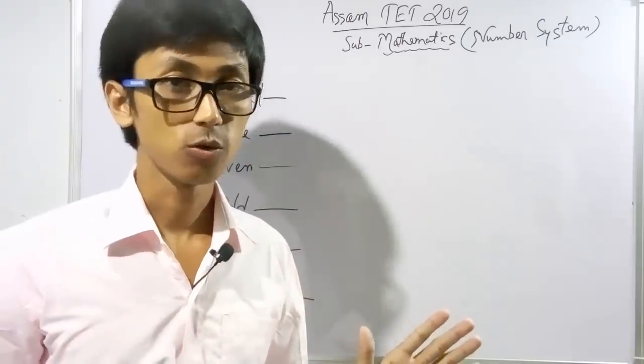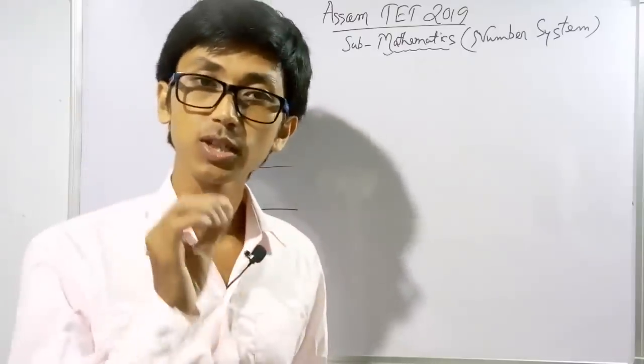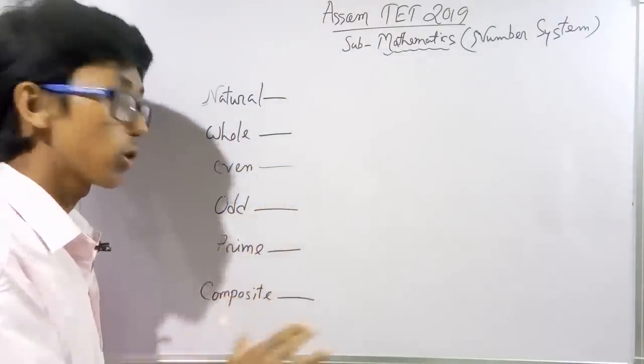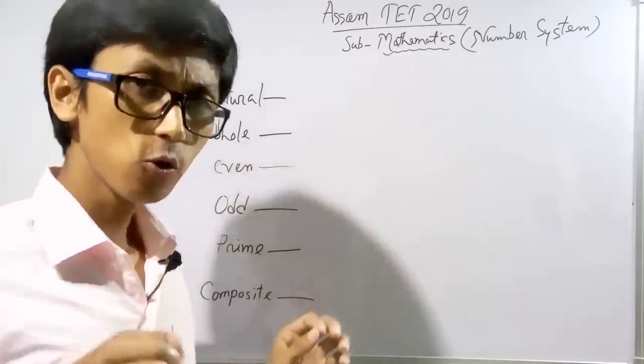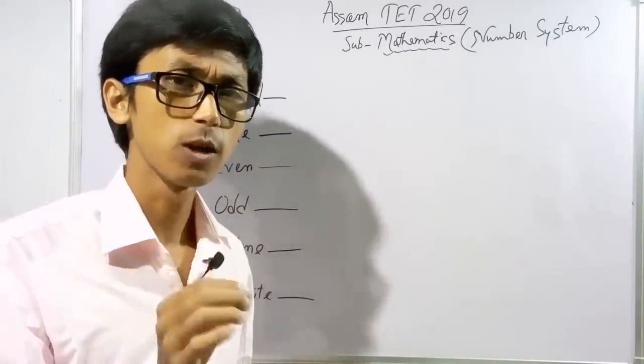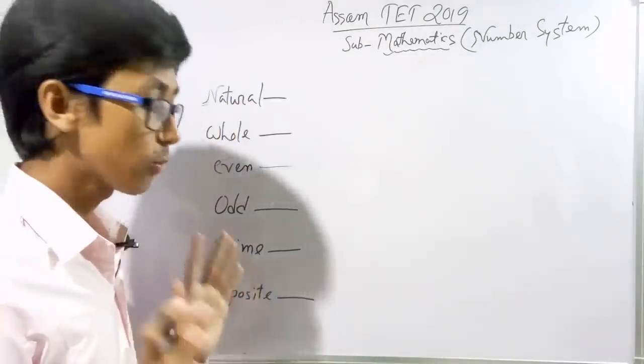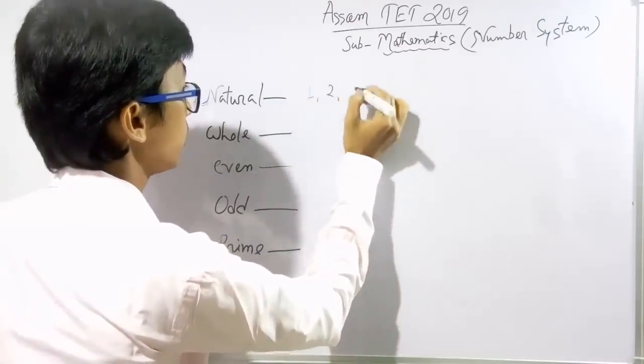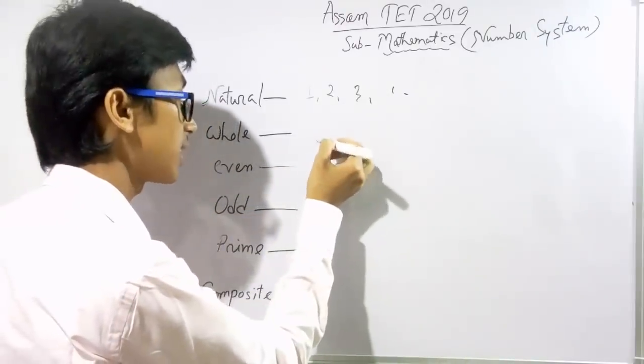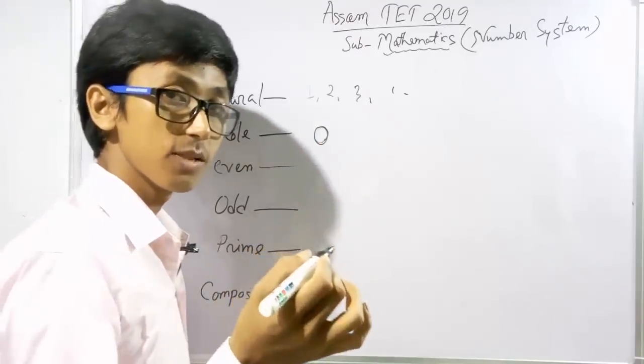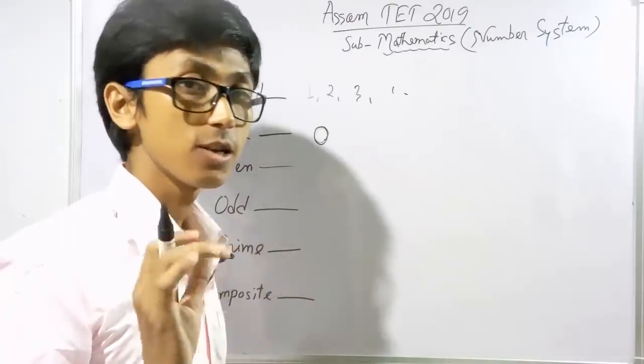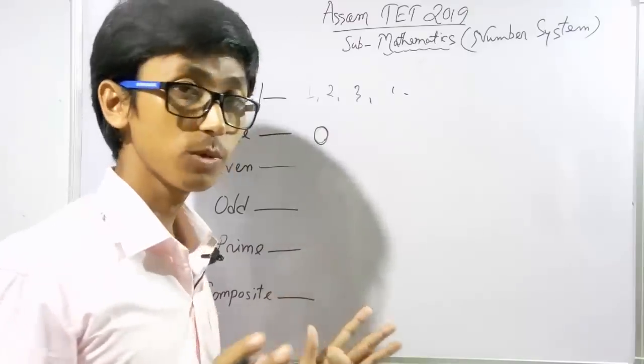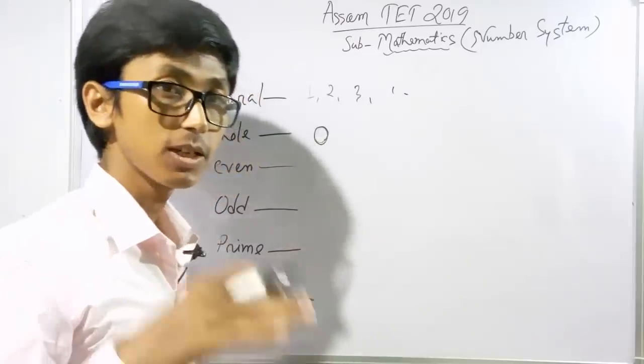I will show you number systems: whole numbers, even numbers, odd numbers, prime numbers, and composite numbers. Let me explain these concepts with examples to help you understand. Whole numbers include zero and all natural numbers.